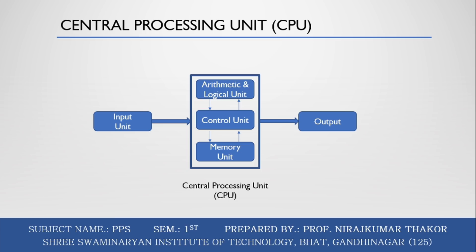The Control Unit controls all the activities or operations performed inside the computer system. It receives instructions or information directly from the main memory of the computer. When the control unit receives the instruction set, it converts the instructions into control signals, which are then sent to the central processor for further processing.